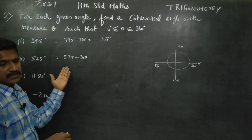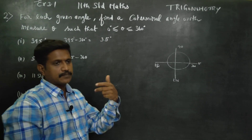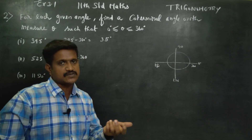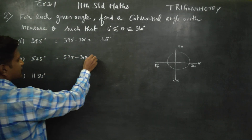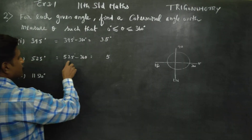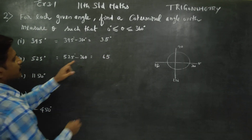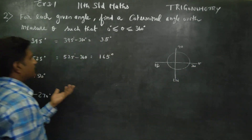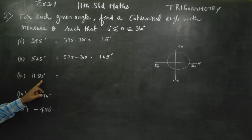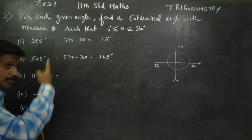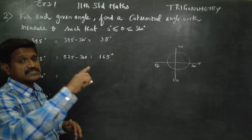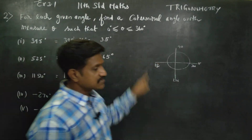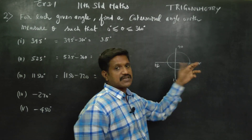You have to subtract 360 because 360 is one extra rotation. For example, 525 degrees: you have to subtract 360. 525 minus 360 gives 165 degrees. That is one rotation removed, leaving you with the co-terminal angle.